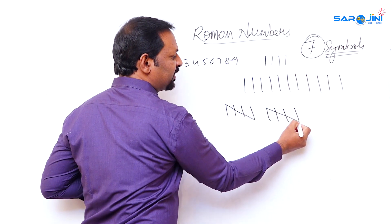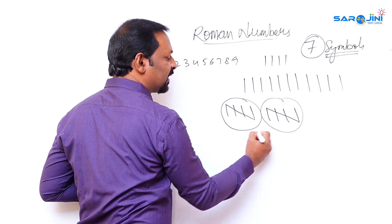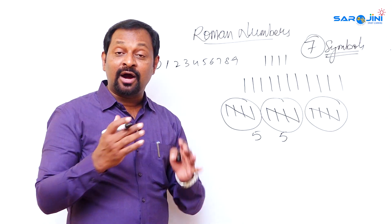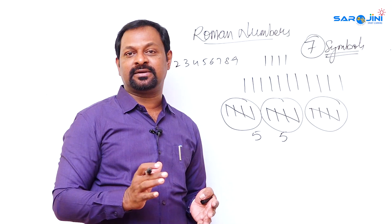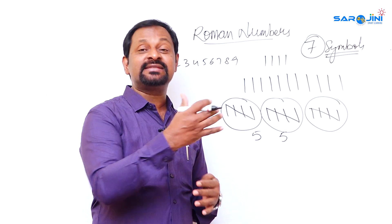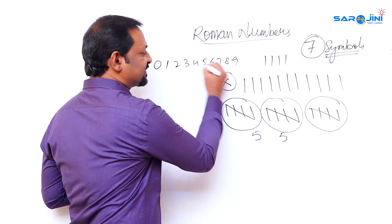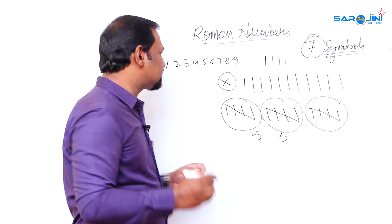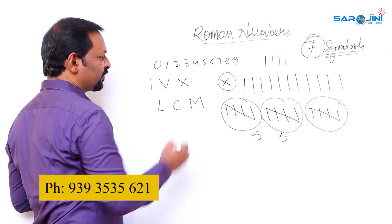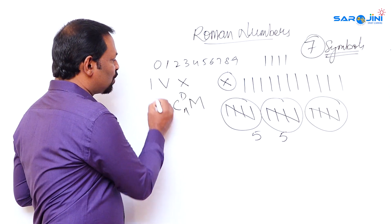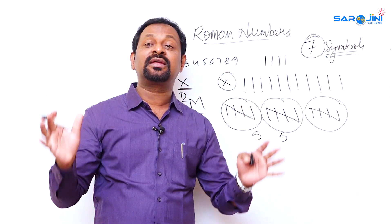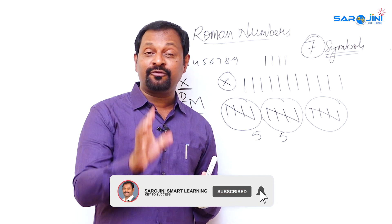In Roman numbers there are around seven symbols using alphabets. One through four lines, then a cross line makes five — so a group of five was represented by that bundle. Later, for ten they used X. The seven basic symbols are: I, V, X, L, C, D, and M.